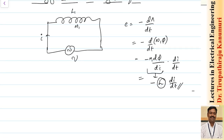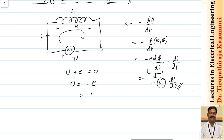Applying KVL in this loop: v + e = 0, so v = −e. From this, v equals L·di/dt. This is our first key observation.